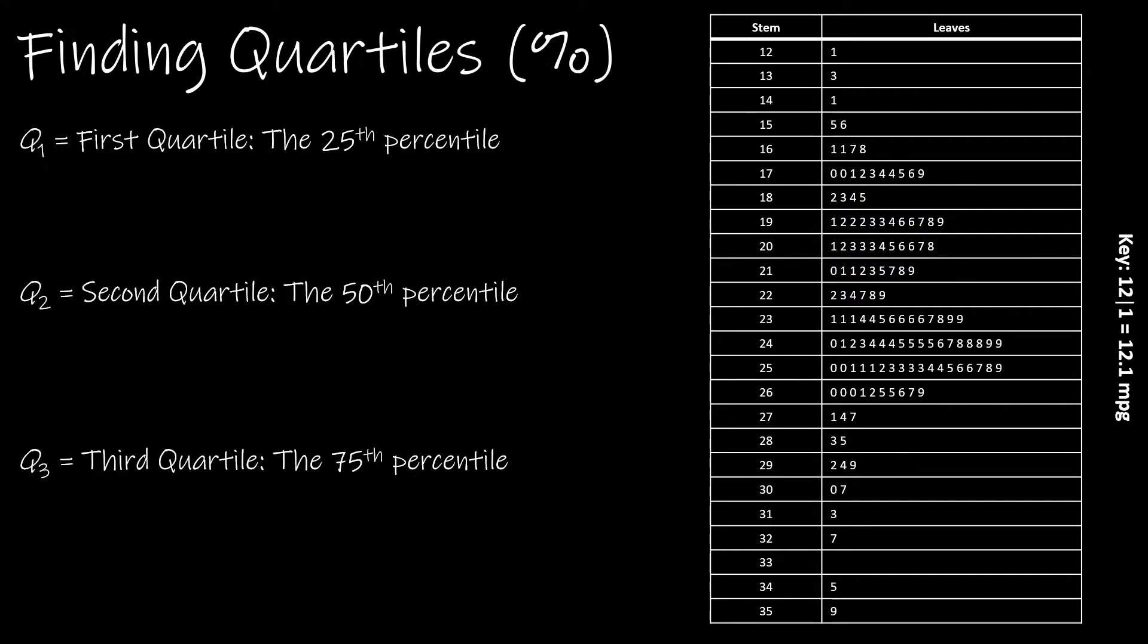Now that we're becoming familiar with finding percentiles, let's talk about the quartiles. The quartiles are simply special percentiles. The first quartile is the 25th percentile. The second quartile is the 50th percentile, also known as the median. And the third quartile is the 75th percentile. Typically when someone's talking about the quartiles, they're talking about Q1 and Q3, as the median, which is Q2, is usually just called the median.